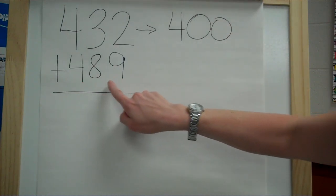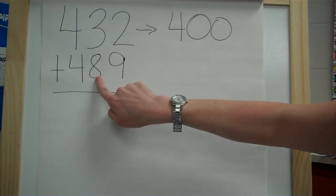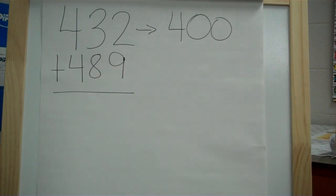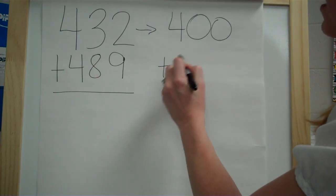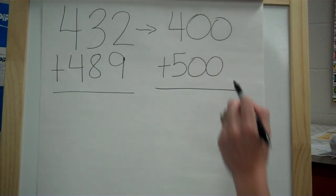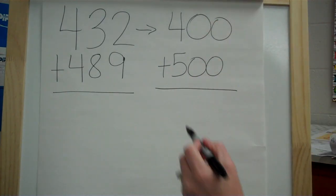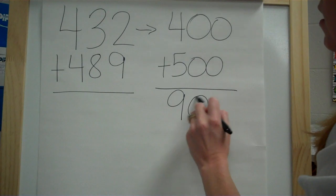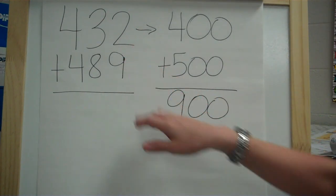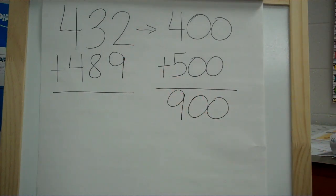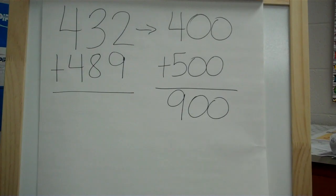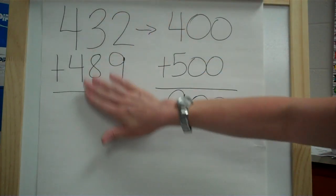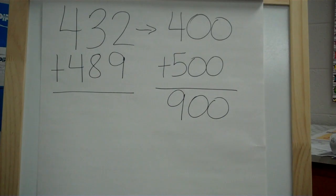Now let's look at 489. The eight is higher than five, so that's going to push the four up to the next hundred, which would be 500. So I can round those. 400 plus 500 is 900. So 432 plus 489 is about 900. So all we do is we round to the nearest hundred and then add those estimates.